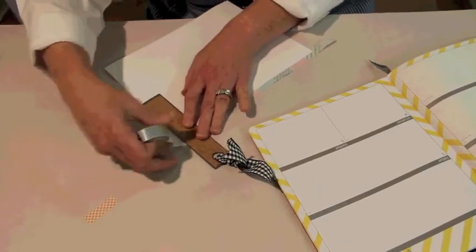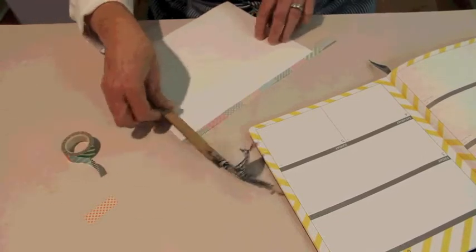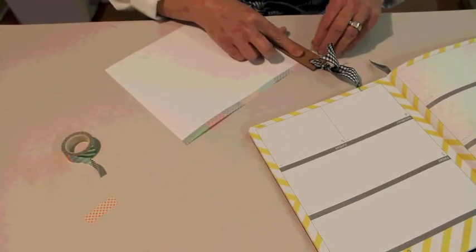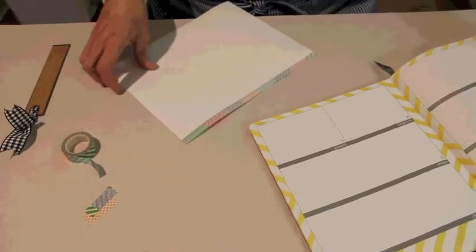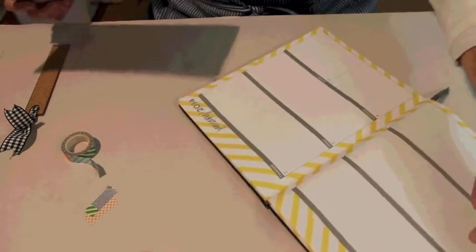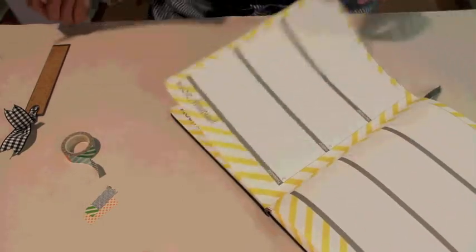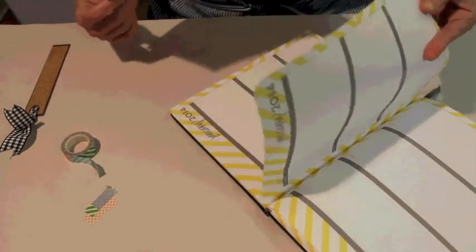Then I'm going to take my metal ruler and just tear my tape flush with the edge of my paper. And then I'm going to take my journal and I want to put it on this page, so I lift up the page that I want to put it on.